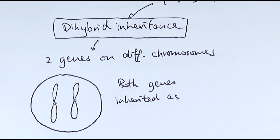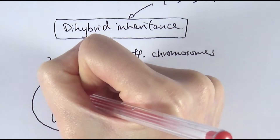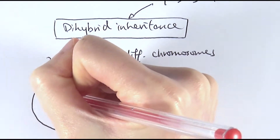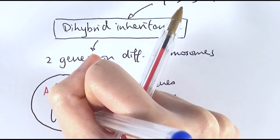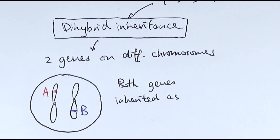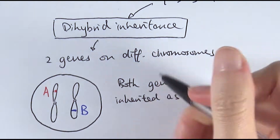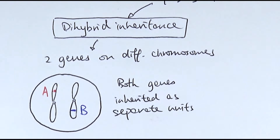When we talk about dihybrid inheritance, we're talking about the inheritance of two genes on different chromosomes. For example, if I've got gene A here on this particular chromosome, then I've got gene B on the other chromosome, and we say that they are inherited as separate units. So this is dihybrid inheritance. If you want to go into this in a lot more detail, please feel free to check out the other video - I'll put the link in the description below.